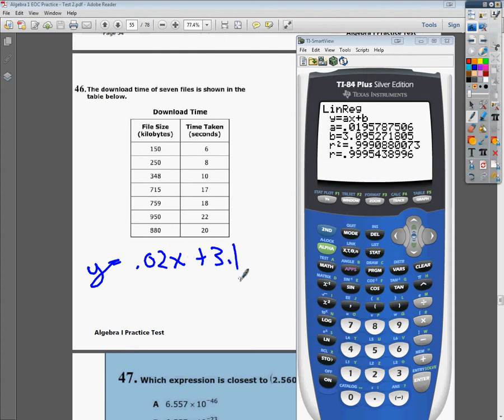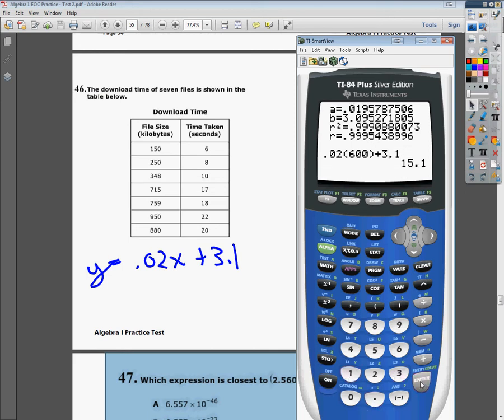Now I'm just going to plug in the information. I remembered that the file size was 600 kilobytes, so I'm going to type into my calculator 0.02 times 600, because the x is what we're plugging in, plus 3.1, and I hit enter. It gives me 15.1, which is pretty close to 15, which is exactly the answer we suggested it probably was looking at the problem earlier.